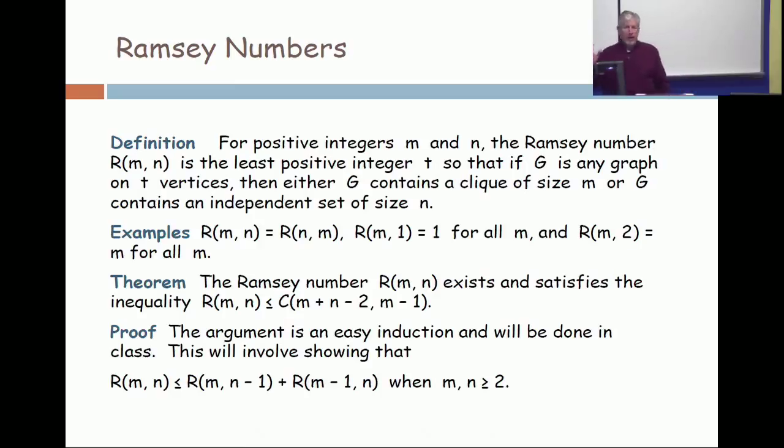Because if it mattered, you could take a big graph and take its complement. And when you take the complement, cliques are turned into independent sets and independent sets are turned into cliques. So you've just reversed the role of being a big clique and being a big independent set. So there's obvious symmetry to these numbers.